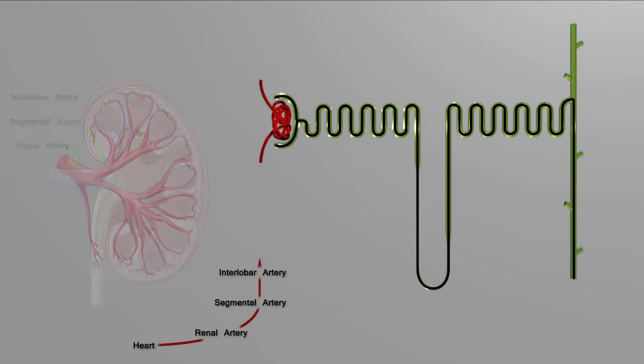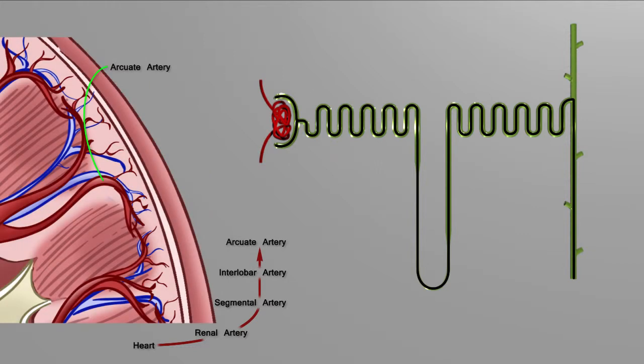And then that continues on to become the arcuate artery, and you can see with the arcuate artery it actually arcs over top of the pyramid, hence why we have its name, arcuate.